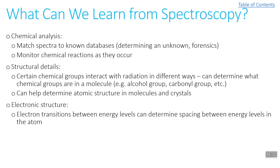What can we learn from spectroscopy? We can do chemical analysis by matching spectra to known databases. We can also monitor chemical reactions as they occur. We can determine structural details of a molecule — certain chemical groups interact with radiation in different ways, so we can determine what groups are present, such as an alcohol group or a carbonyl group. We can also determine atomic structure in molecules and crystals, and study electronic structure — electron transitions between energy levels help us determine the spacing between energy levels in an atom.